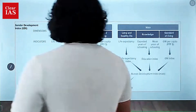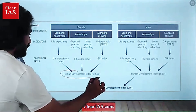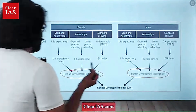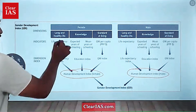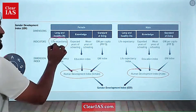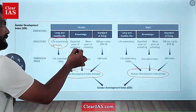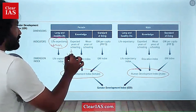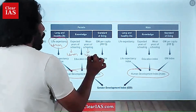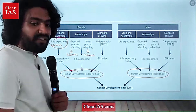Here is how the gender development index is actually calculated. We have female HDI and male HDI. Female HDI is based on the life expectancy of women, expected years of schooling of women, and mean years of schooling of women, because all these are not the same as those of men.